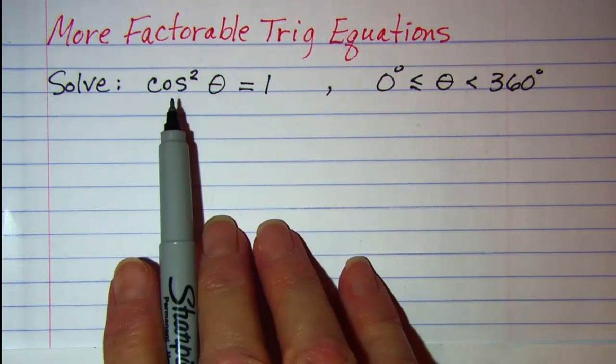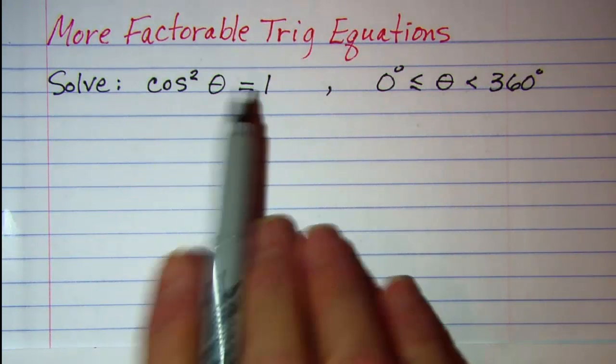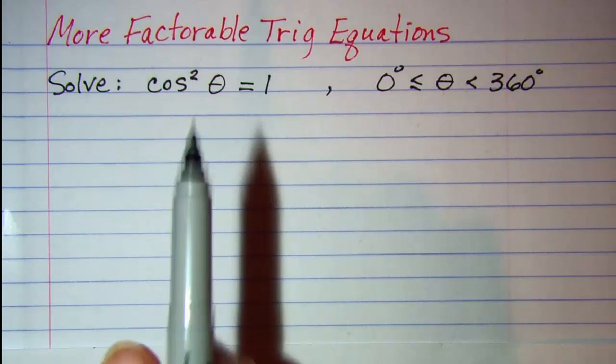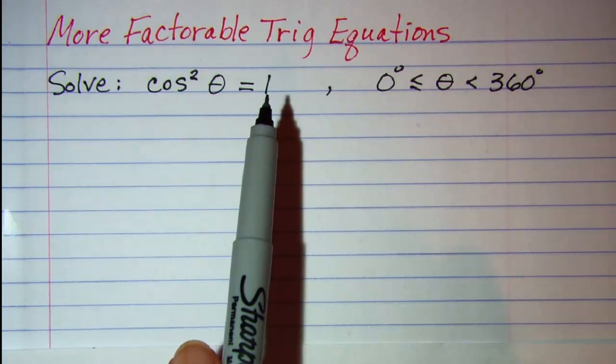Now one way to approach this problem is to square root both sides. You must be careful though that when you square root you put plus or minus 1.